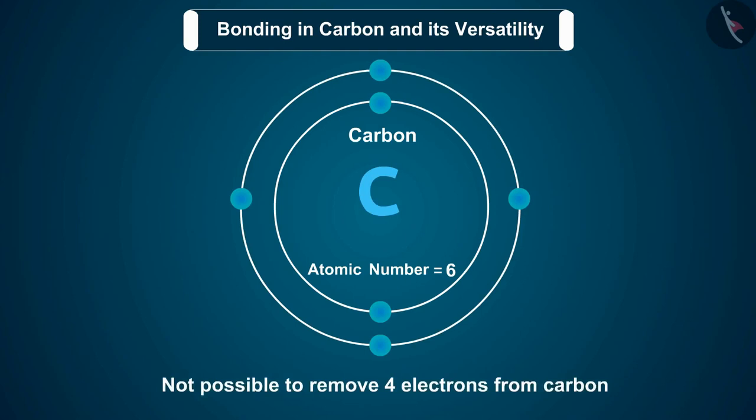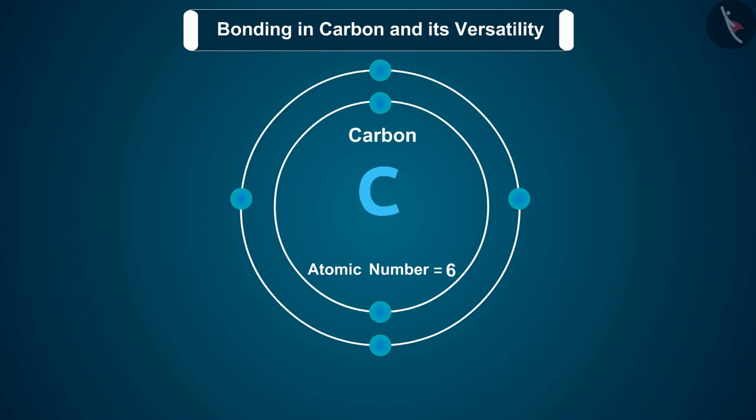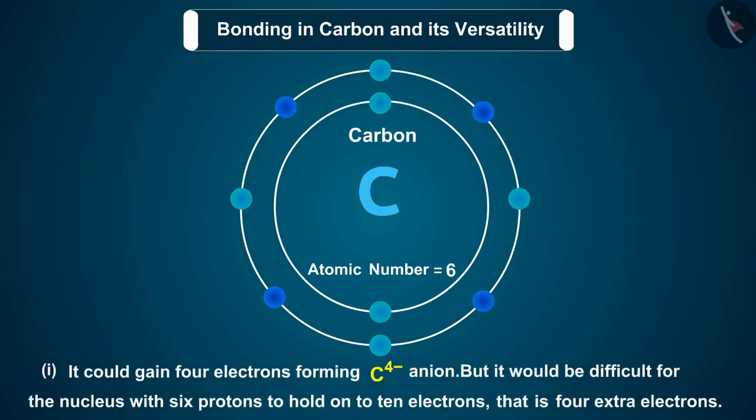It is also not possible to gain these many electrons due to energy considerations. If carbon were to gain 4 electrons, it would form a C4- anion. But it would be difficult for the nucleus with 6 protons to hold on to 10 electrons, that is 4 extra electrons.